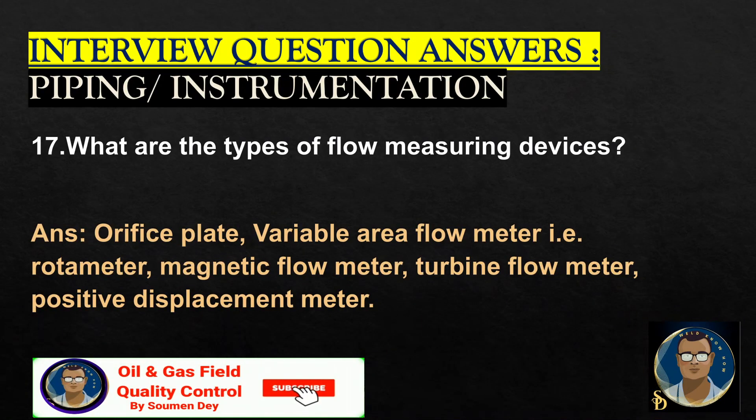What are the types of flow measuring devices? Orifice plate, variable area flow meter (rotameter), magnetic flow meter, turbine flow meter, and positive displacement meter.